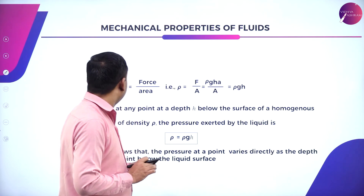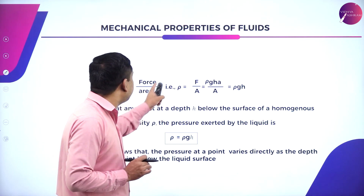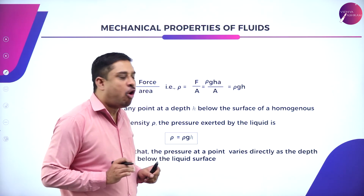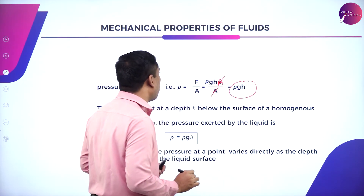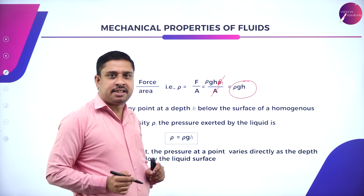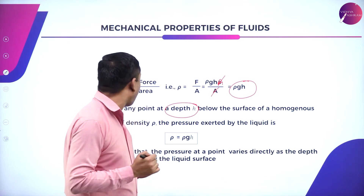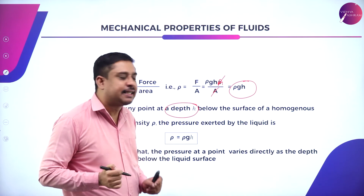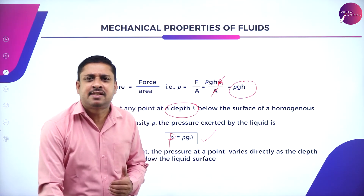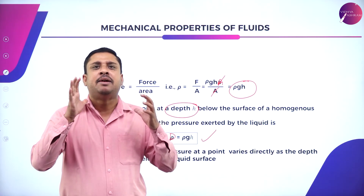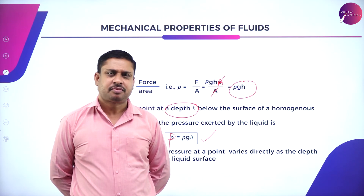We know pressure is force divided by area. So liquid pressure equals F divided by a, which gives ρgh divided by a, times a — the area cancels. Therefore, pressure P equals ρgh. This means at any point at a depth h below the surface of a liquid, the pressure exerted is always P = ρgh.